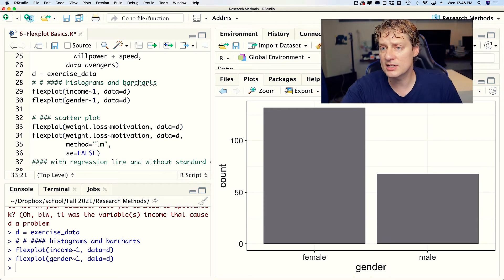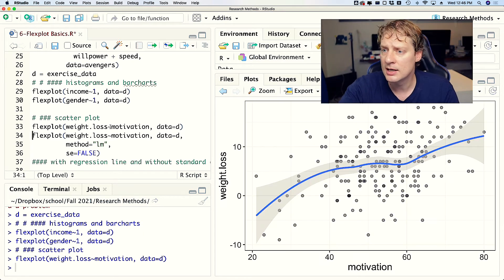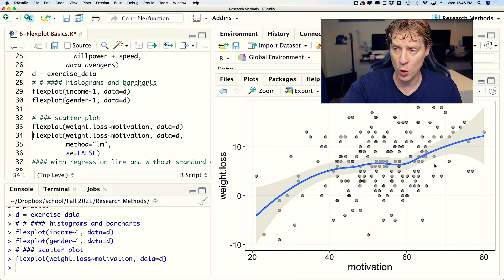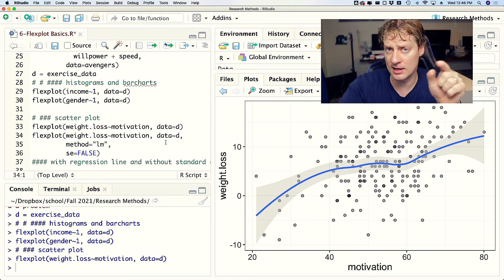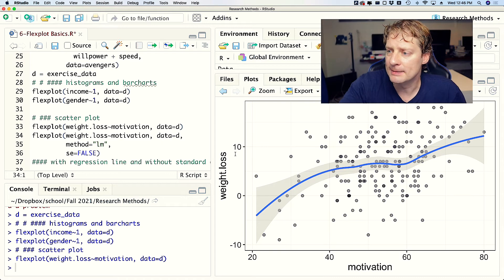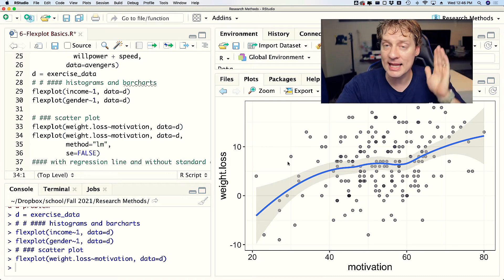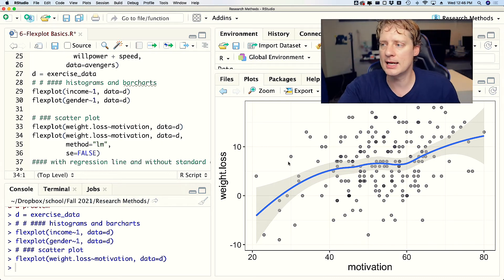Now let's look at some examples. We can do a scatterplot of weight loss on motivation. And Flexplot will default to this squiggly line, which we call a Loess line, which comes from the German word Loess, which means something. Loess line is a line that is allowed to bend with the data, and so Flexplot defaults to that just in case there are any bends. It wants to make sure you don't miss them.